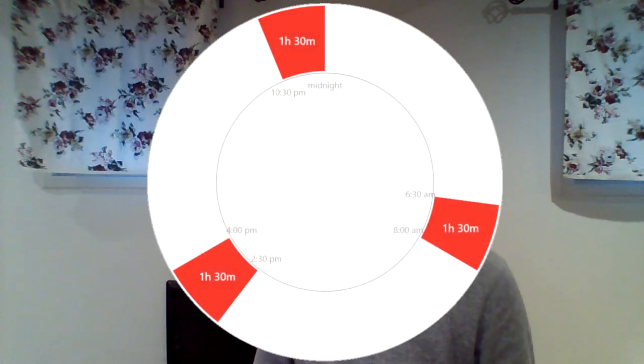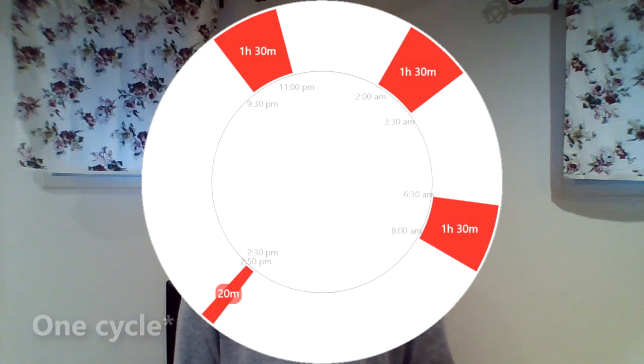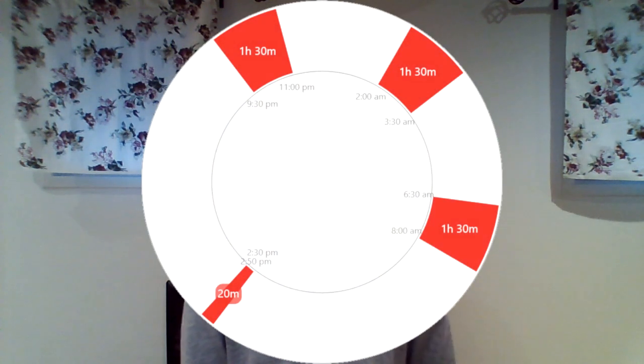The standard tricore schedules are named with each core having a single cycle. So Triphasic is three cores of three cycles each, Tricore 1 is three cores of one cycle each and a nap, and so on.